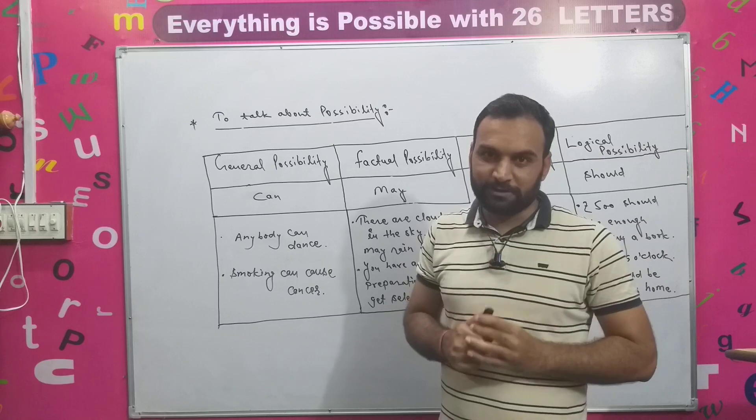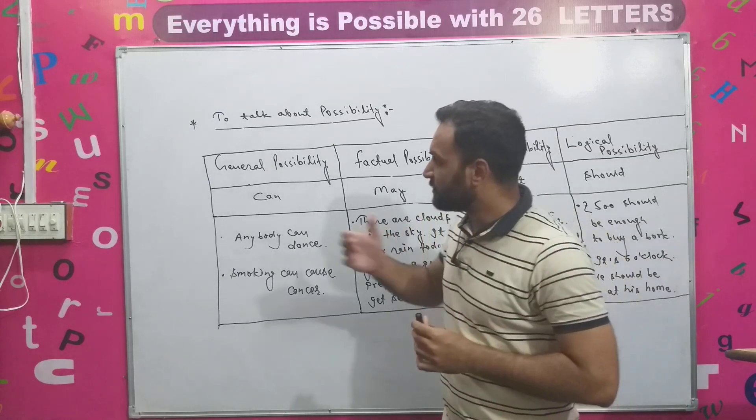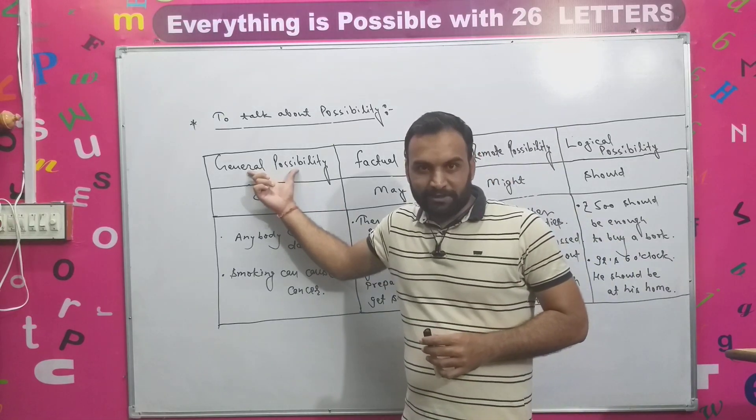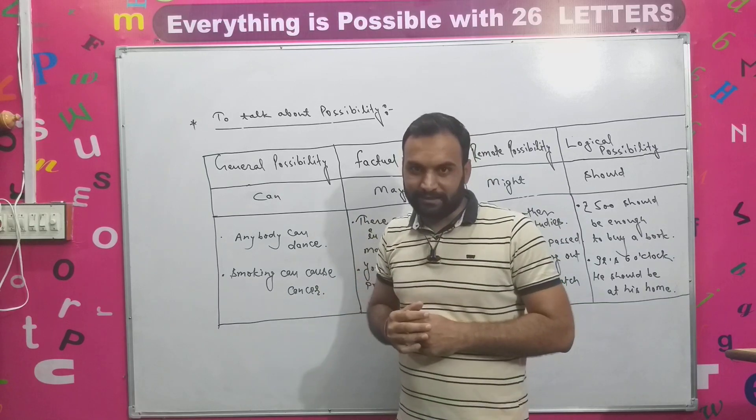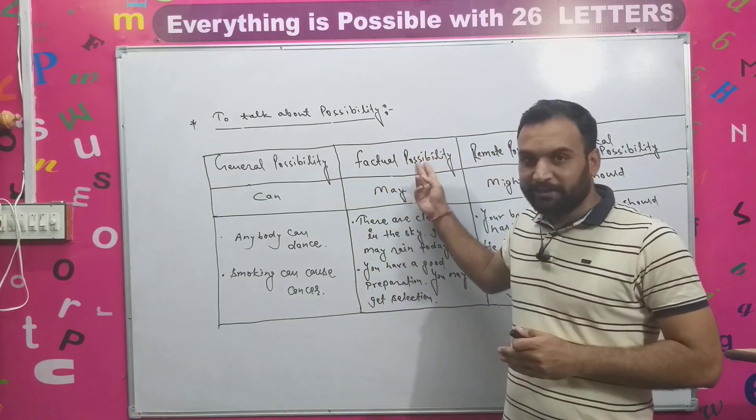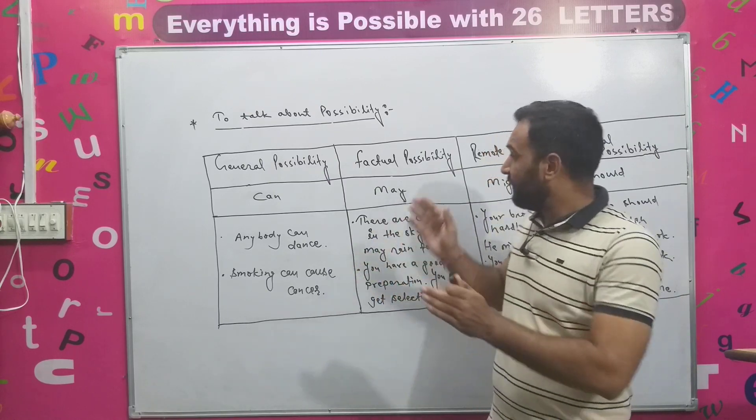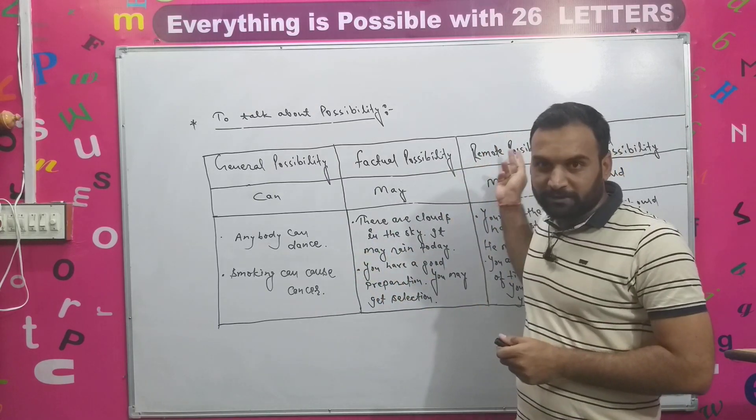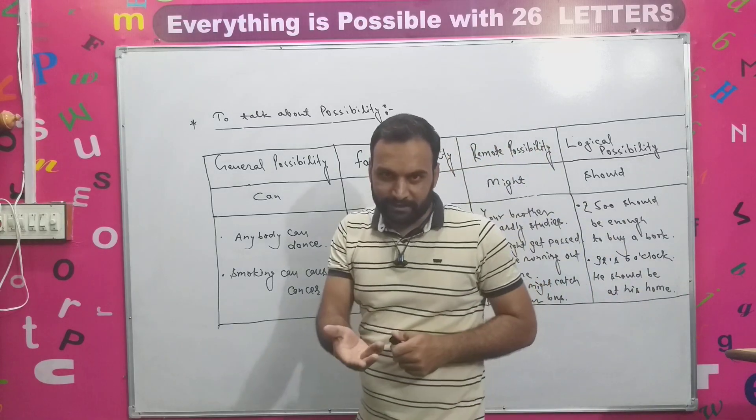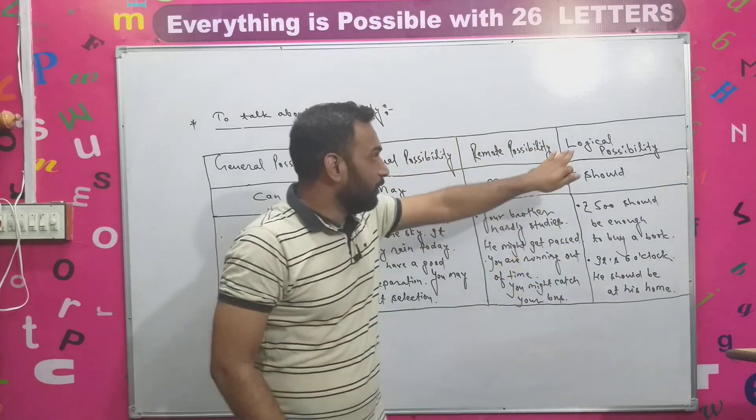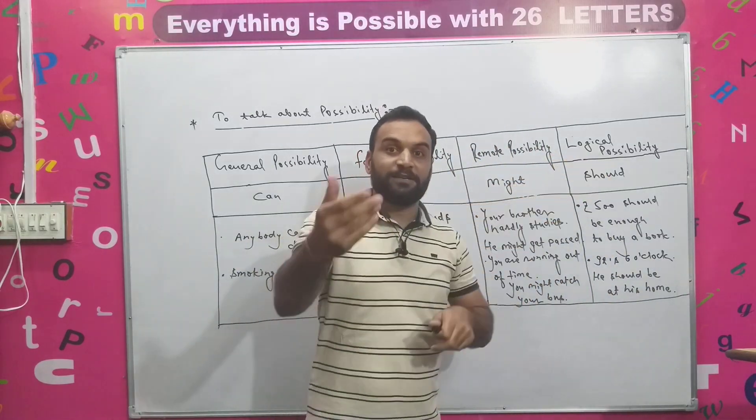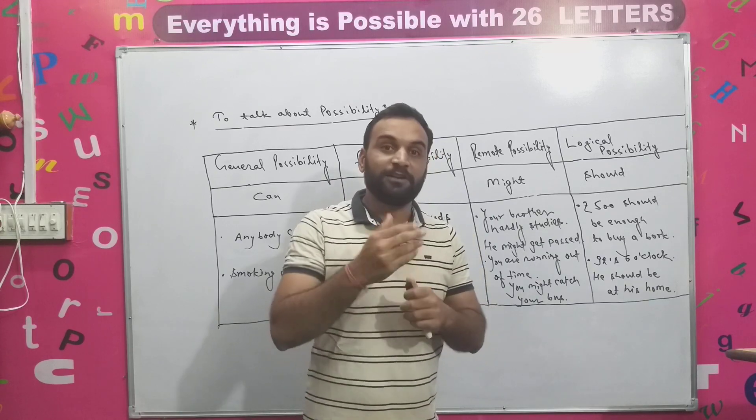In English, there are four types of possibilities, basically. The first one is general possibility, which you can call Samanya Sambhavna. Second is factual possibility, which you can call Tathatmak Sambhavna. Third is remote possibility, which we call Durgam Sambhavna. And the fourth one is logical possibility, which we call Tarkik Sambhavna.